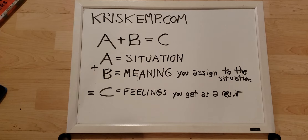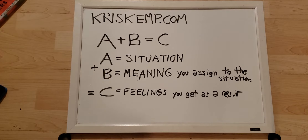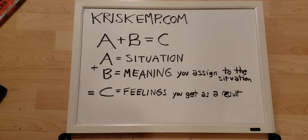So let's talk specifically about how you could use the ABC method in your life. A equals the situation. B equals the meaning you assign to the situation, and C equals the feelings you get as a result.